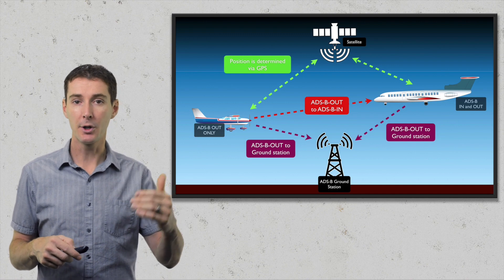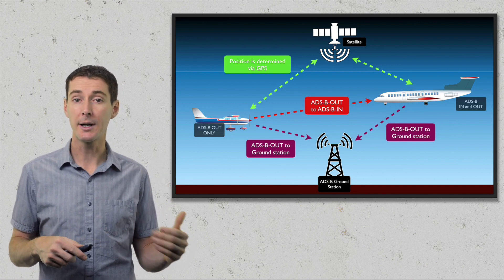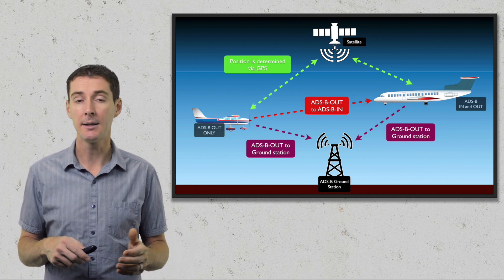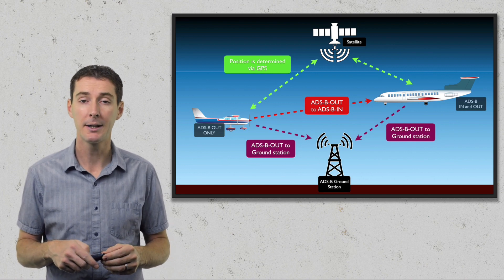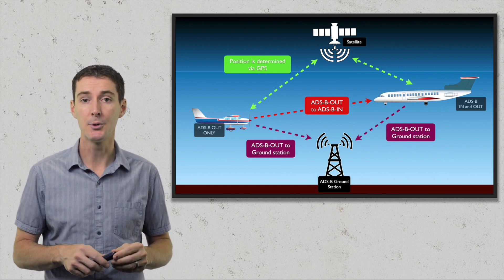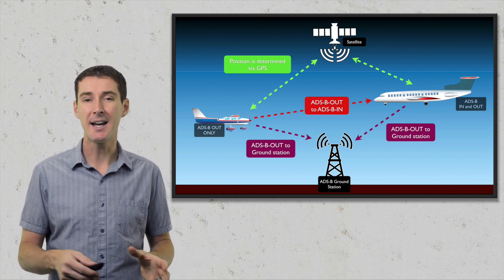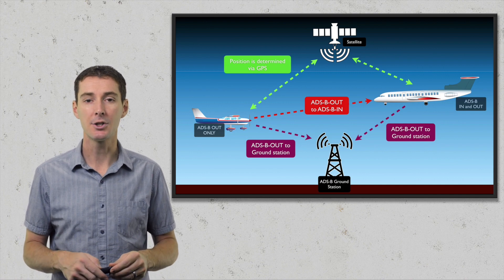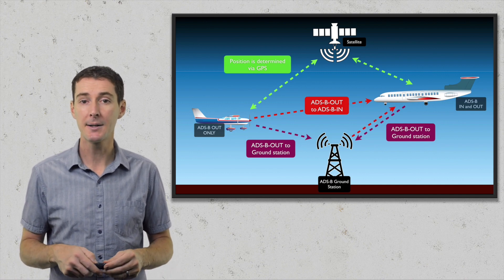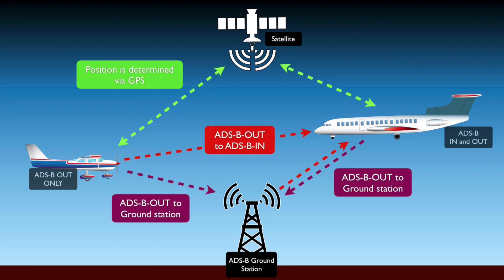So the small airplane broadcasts its information directly to the ADSB In equipment on board the large airplane, and that large airplane can see it without needing the ground station. The ground station can also provide information and send a signal to the large airplane, which receives it via the ADSB In technology.